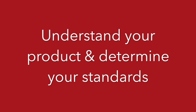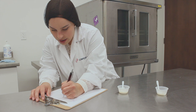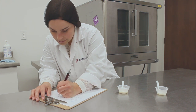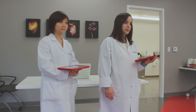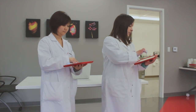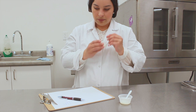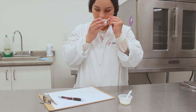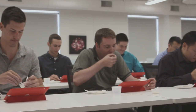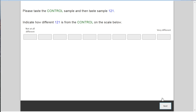Step one: understand your product and determine your standards. You must first identify your control. Determining your ideal product should be based on your company's experienced quality team as well as historical data, and multiple batches should be used to understand the normal acceptable range for consumers. Next, you need to identify the products that are completely unacceptable and would be rejected by consumers, as determined by your quality team and historical data. Finally, you'll want to identify the faults that have led to the product being rejected.